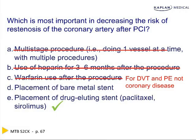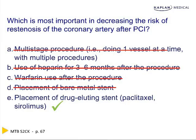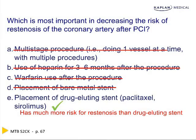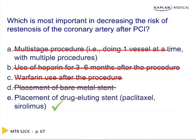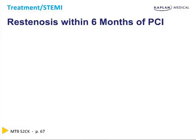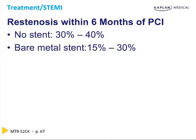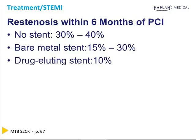Bare metal stents are the opposite of drug-eluting stents — there's more re-stenosis, with a 30% re-stenosis rate, which is why we should not be using them. Without any stent at all — just balloon angioplasty — re-stenosis occurs one-third of the time within six months, which is why stenting is the standard of care. Bare metal stents are still irritating, so they re-stenose more than drug-eluting stents, which inhibit the immune system.